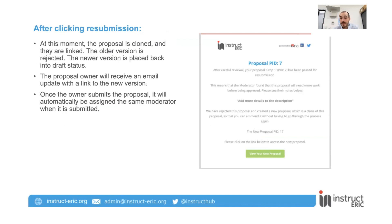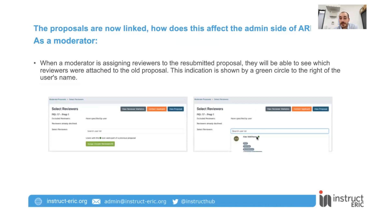At the moment where they submit it, we actually automatically assign the moderator, and it's going to be the same moderator that was assigned to the first proposal, as they know what's going on, they know it's been resubmitted, and they have more knowledge of the situation. However, what we don't do is automatically assign the same reviewers, in case the moderator wants other people to have a look at it. But what we have done is added a green circle next to the reviewers that were assigned to the previous proposal, so the moderator can differentiate which reviewers were attached to the old proposal.